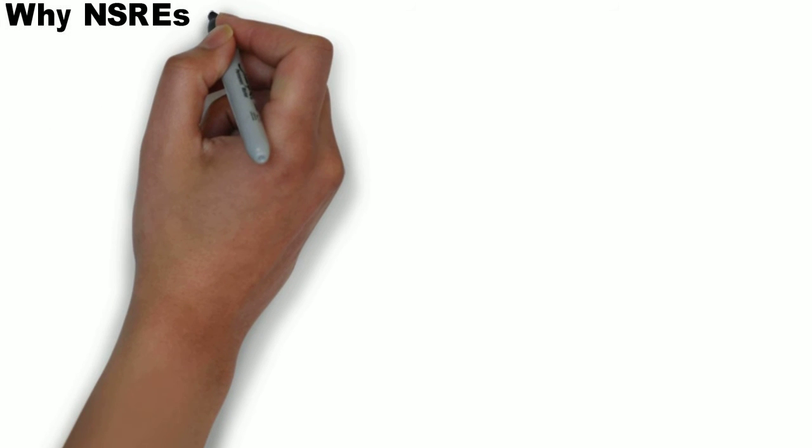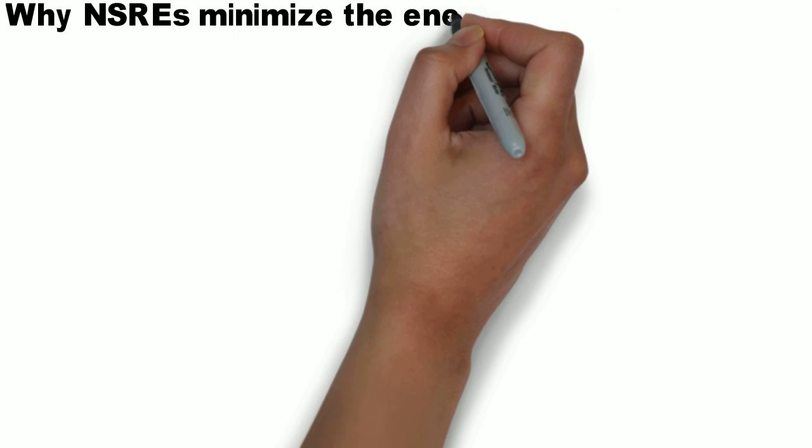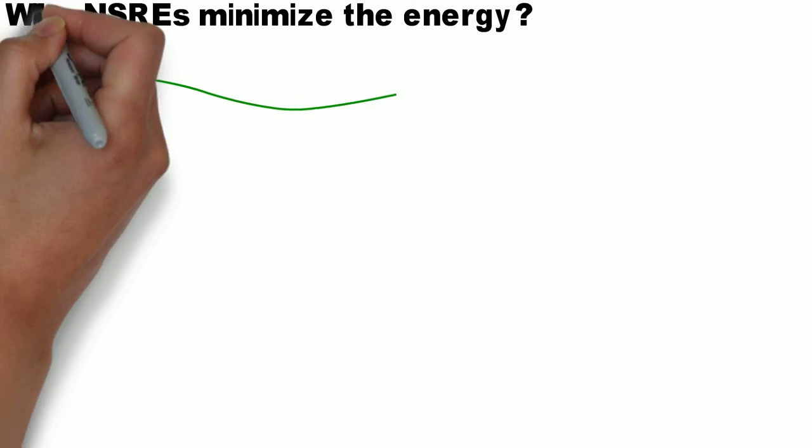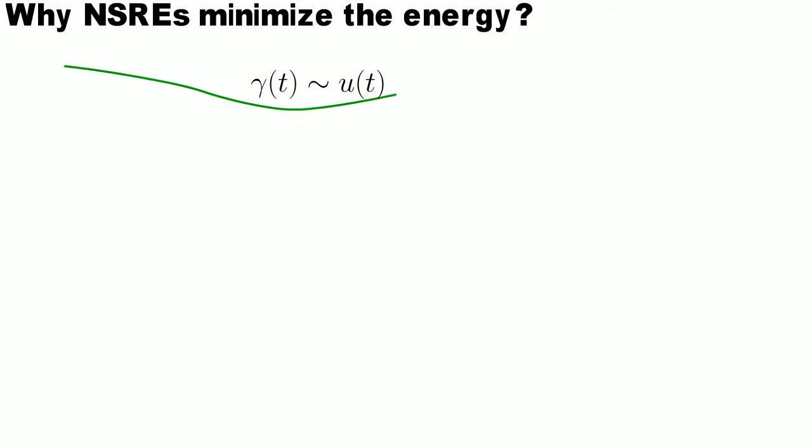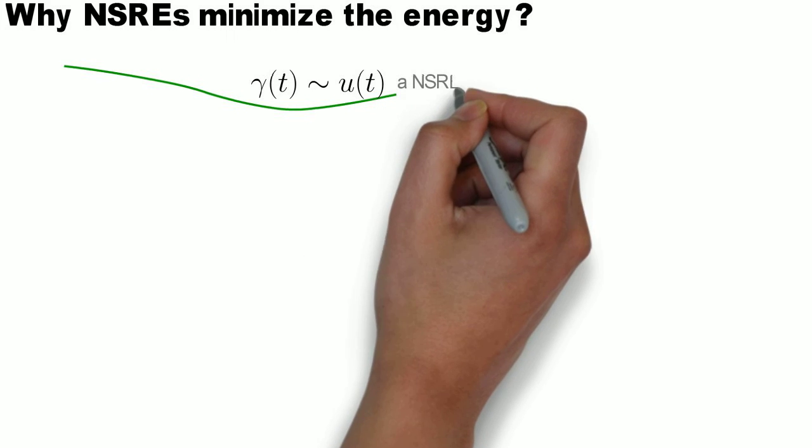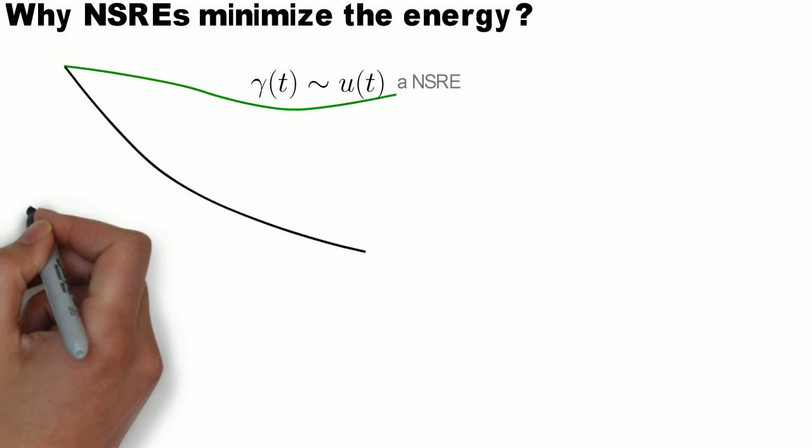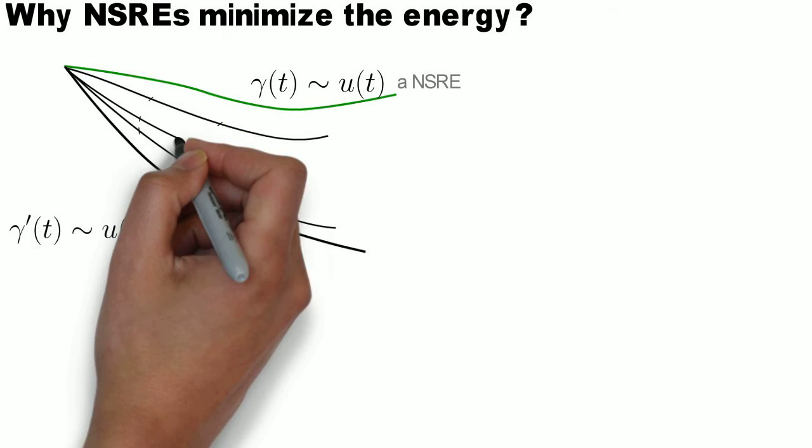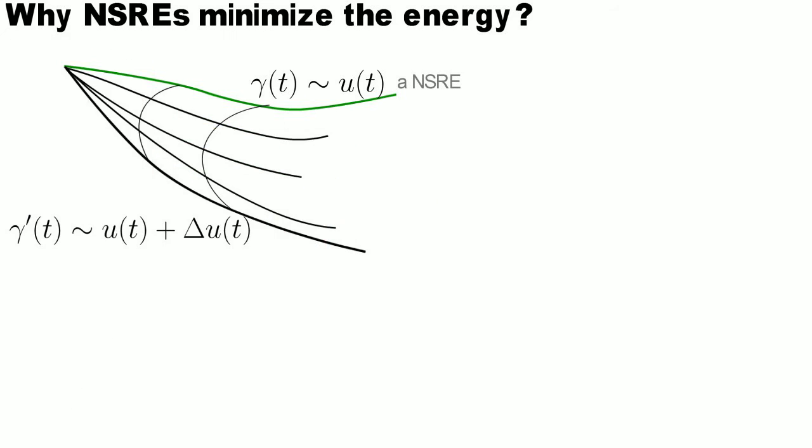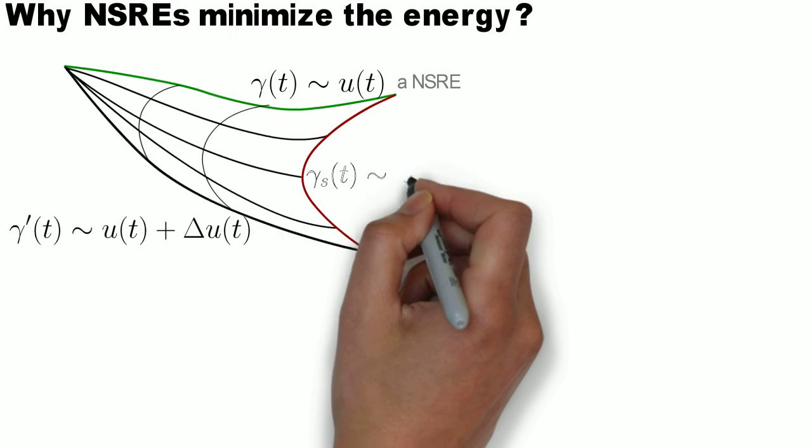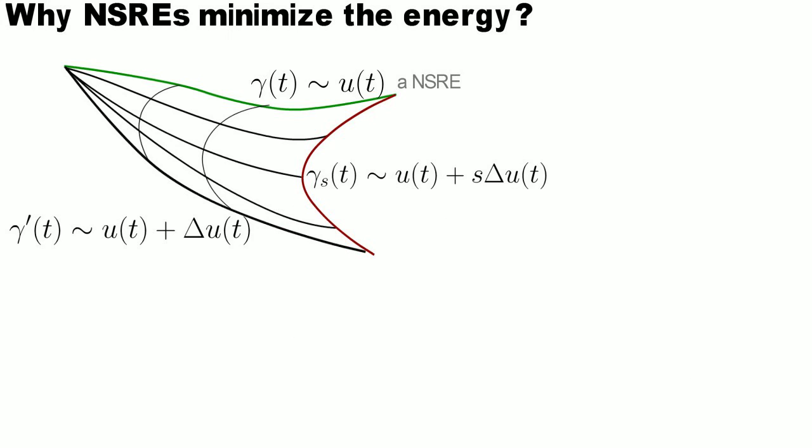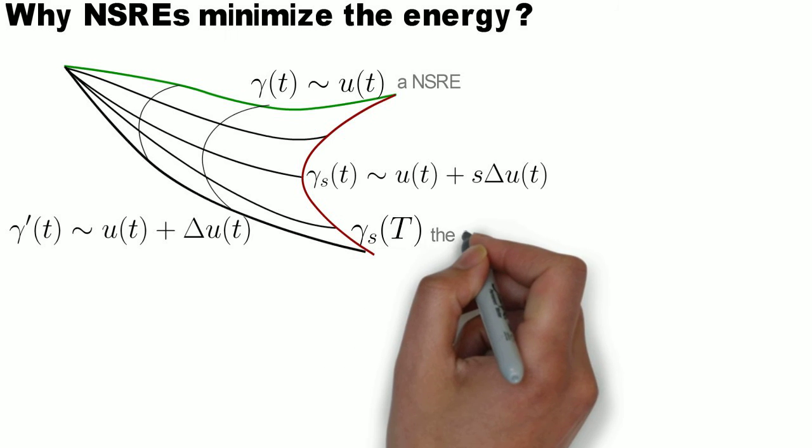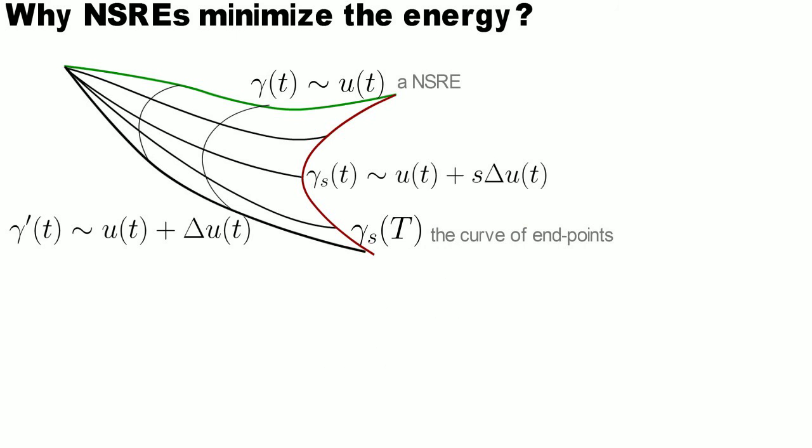Now let us explain how these conditions imply local optimality. We take gamma which is a normal Subriemannian extremal corresponding to control U and another trajectory gamma prime which corresponds to control U plus delta U. Now we construct a homotopy joining these two curves by considering intermediate controls between U and U plus delta U.